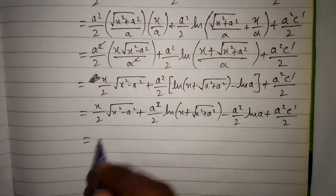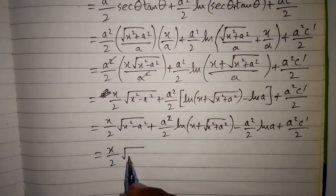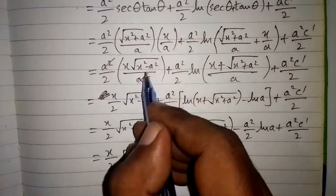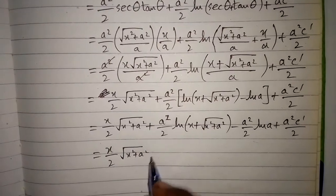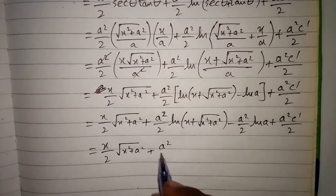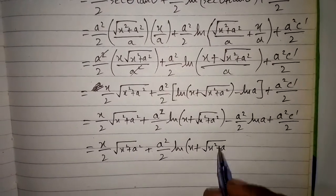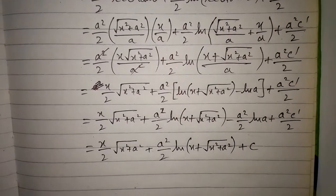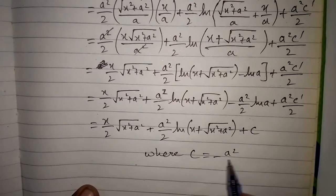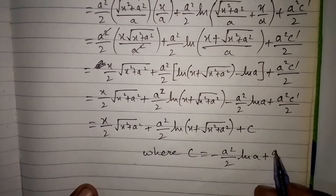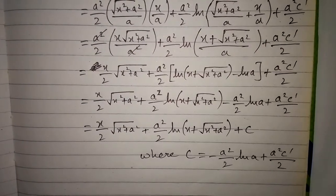The terms minus a squared over 2 times ln(a) plus a squared C′ over 2 are all constants, so we combine them into a single constant C. The final result is: the integral of √(x²+a²) dx equals x over 2 times √(x²+a²), plus a squared over 2 times ln|x plus √(x²+a²)|, plus C. This is the required integral.